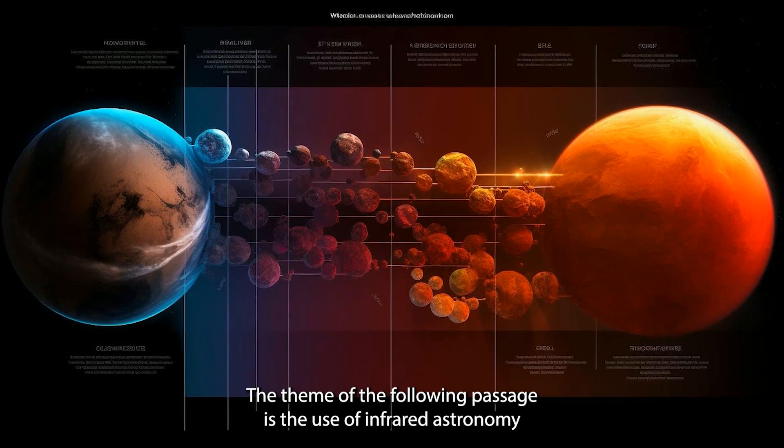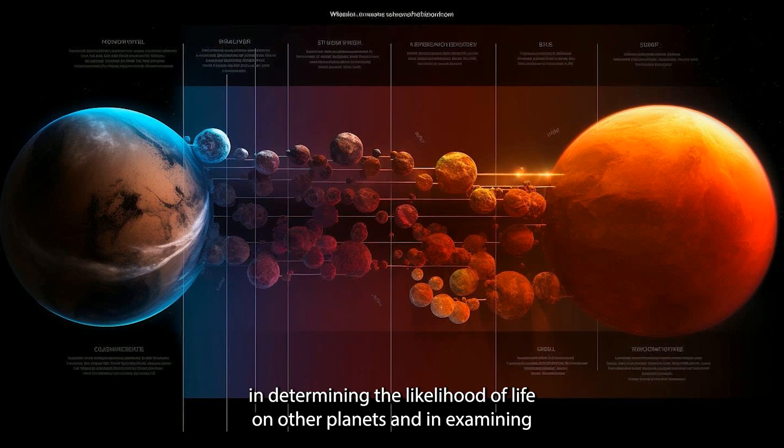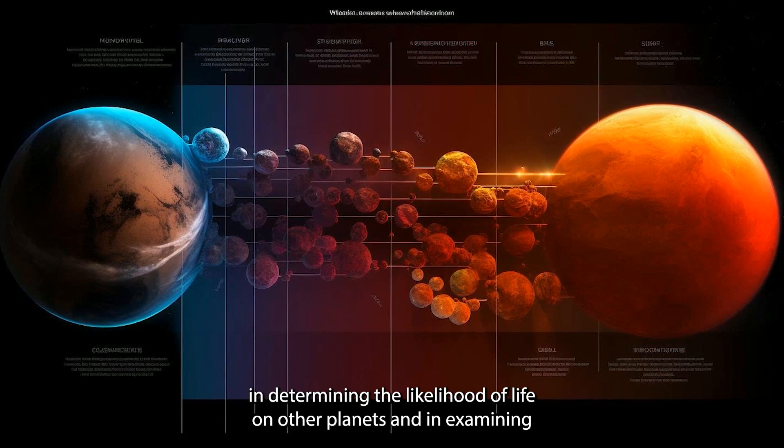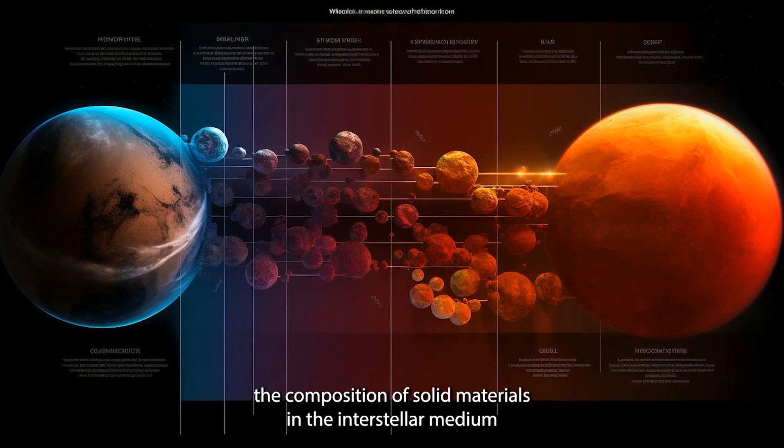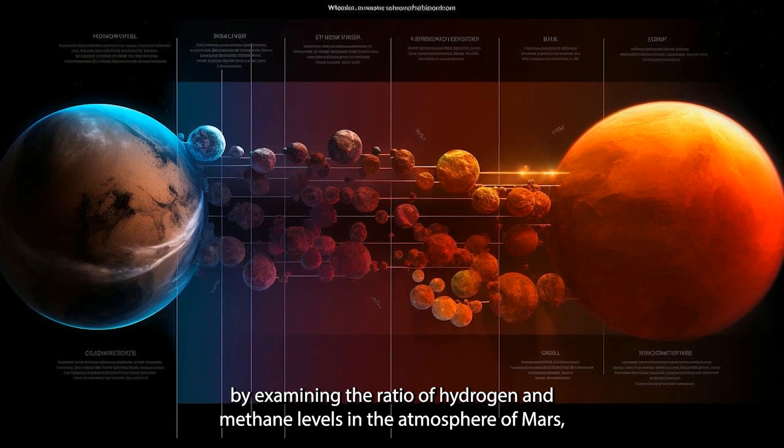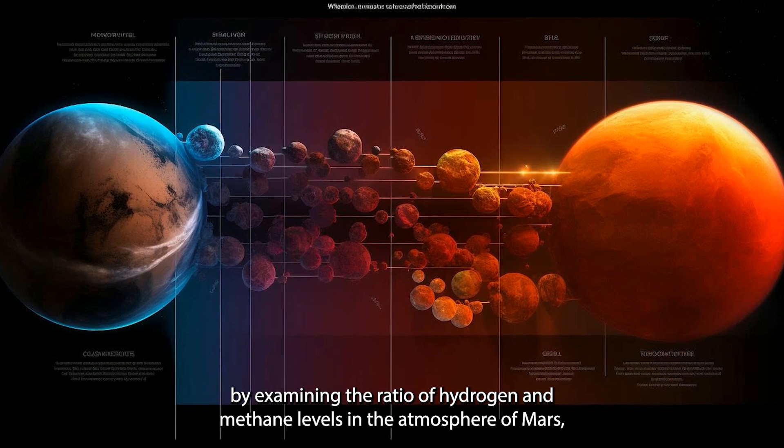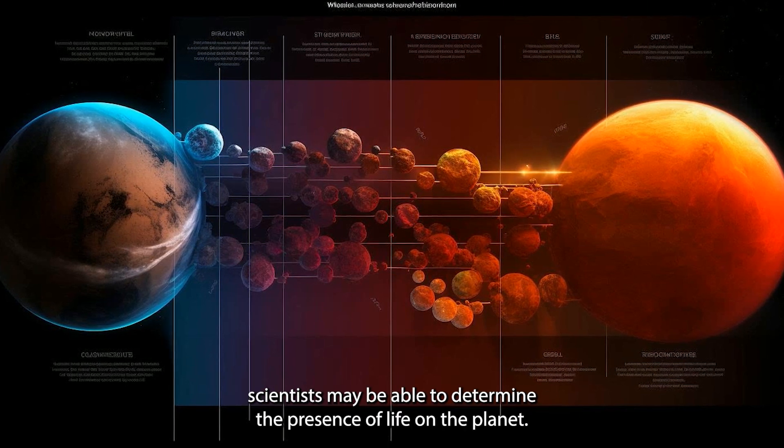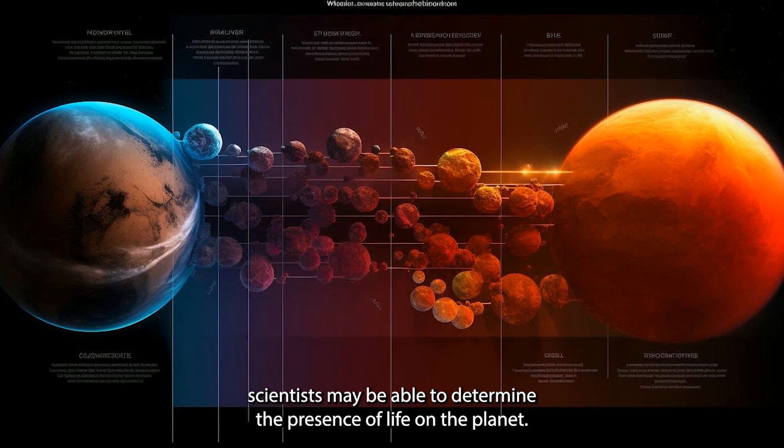Infrared astronomy is used in determining the likelihood of life on other planets and in examining the composition of solid materials in the interstellar medium. By examining the ratio of hydrogen and methane levels in the atmosphere of Mars, scientists may be able to determine the presence of life on the planet.